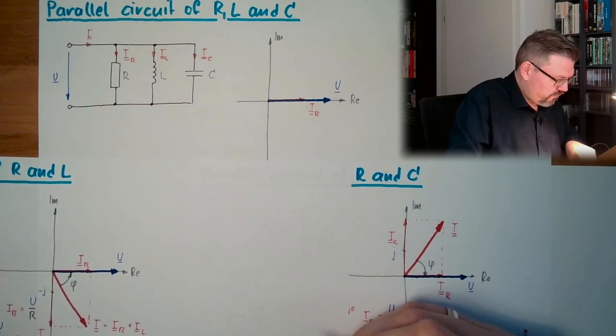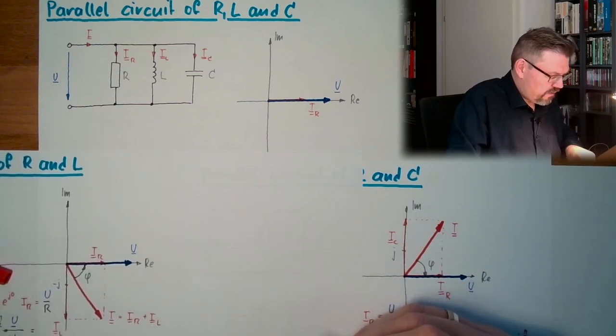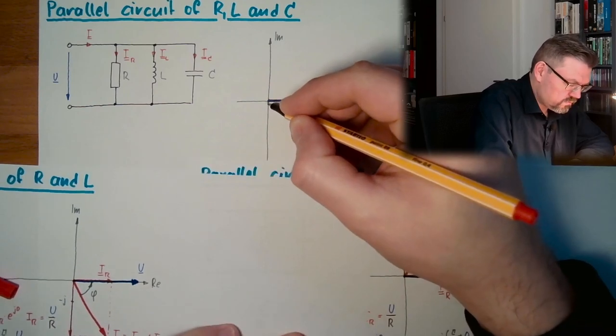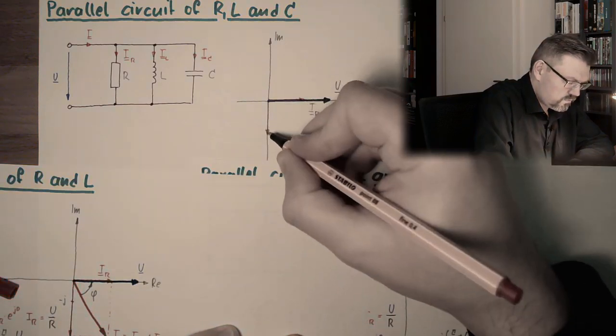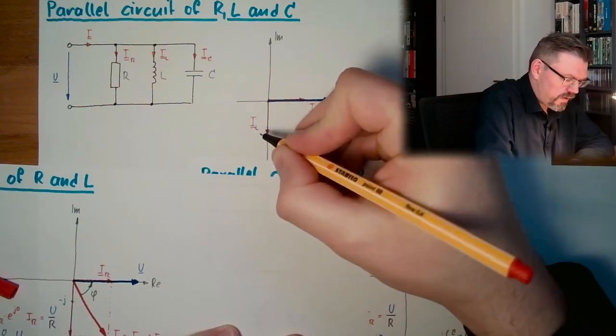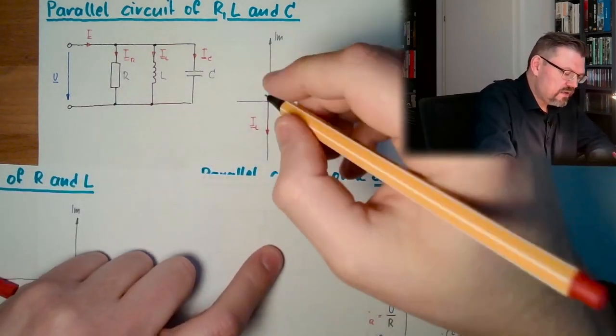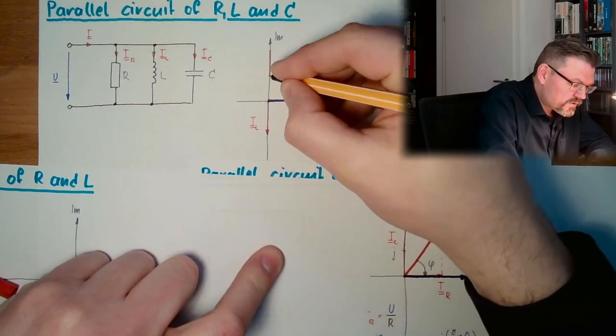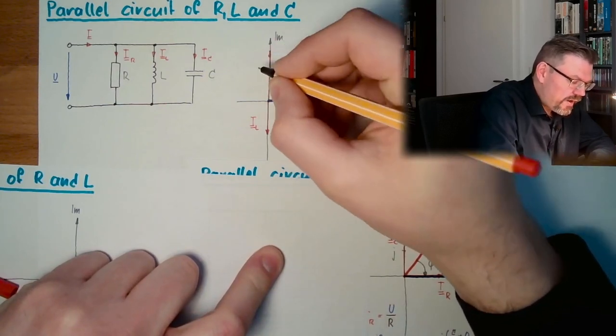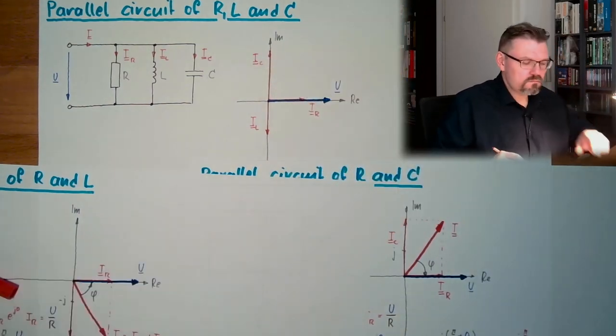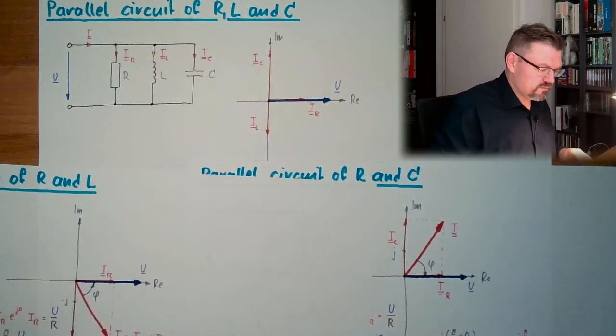Then I have my current through my coil, IL, going down here. It has a certain length determined by the frequency and by the value of L. And then I have IC, also going in this direction, also determined by the length of it, by C and the frequency.